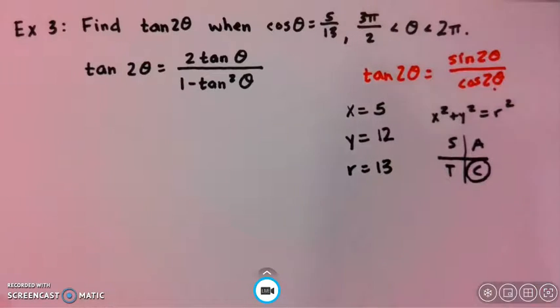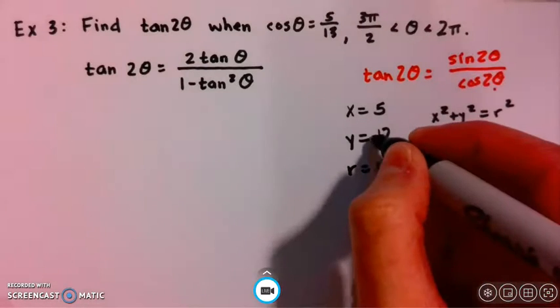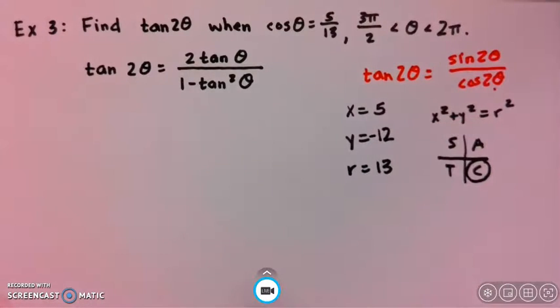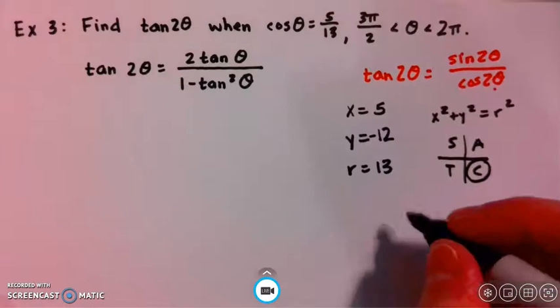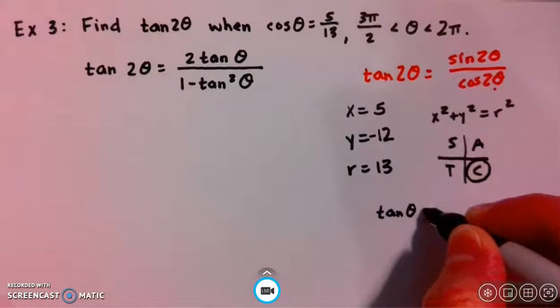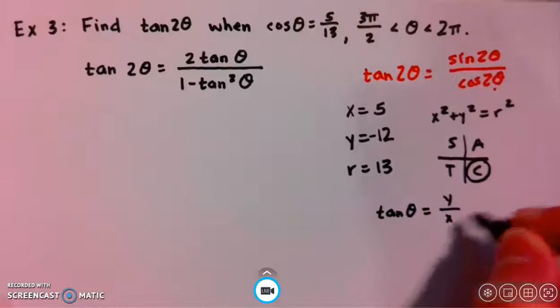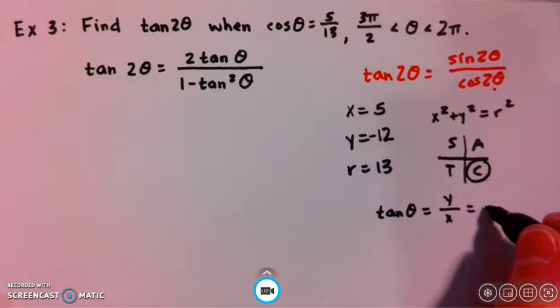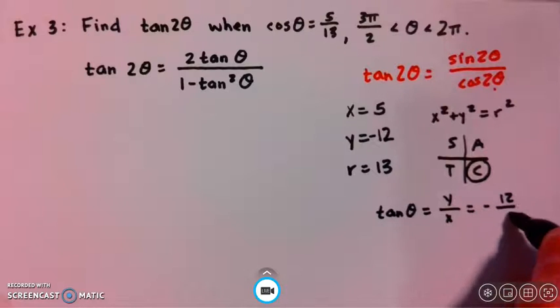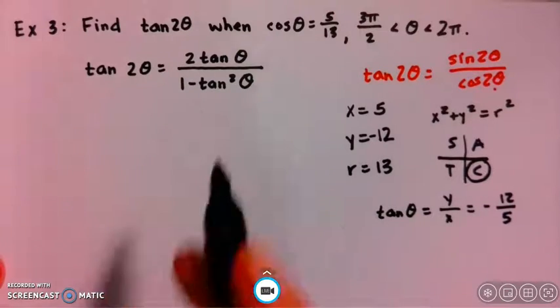In quadrant 4, we have a positive x and a negative y, so that's going to be negative 12. When we want to find the value for tangent, we use y over x. So y in this case is negative 12 and x is 5. Let's now plug this information into our formula.